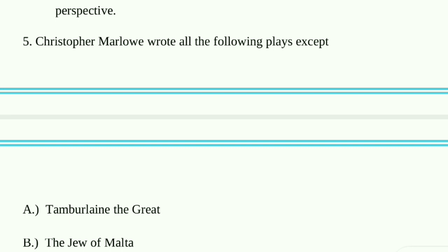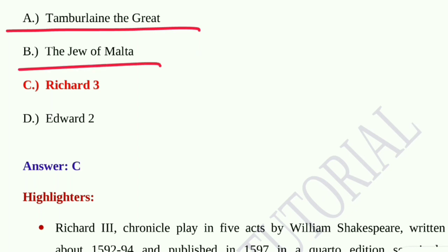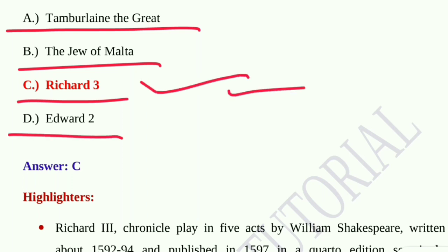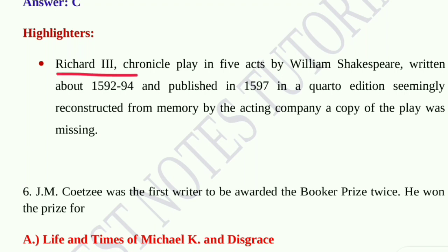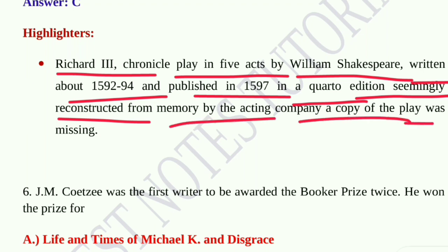Question number five: Christopher Marlowe wrote all the following plays except option A, Tamburlaine the Great; option B, The Jew of Malta; option C, Richard III; option D, Edward II. Option C, Richard III, is the correct answer — it was written by William Shakespeare, not Marlowe. Richard III is a chronicle play in five acts written around 1592–94 and published in a quarto edition in 1597.